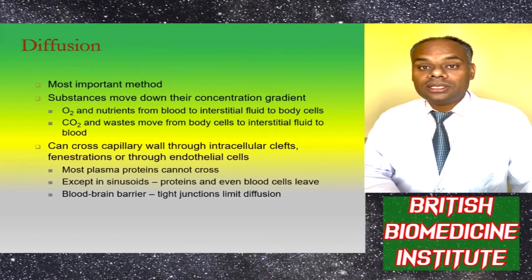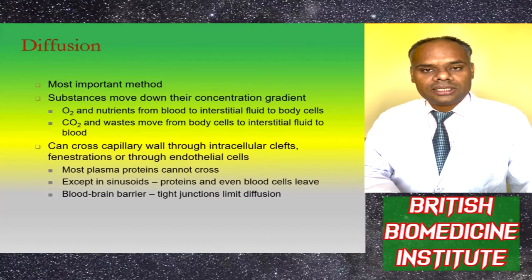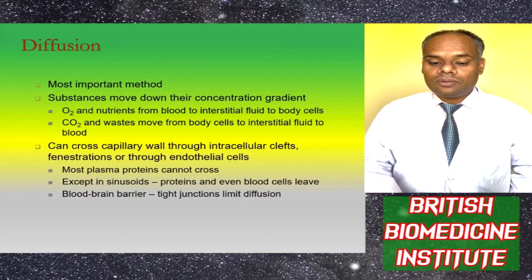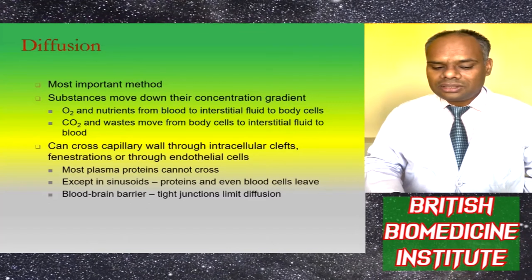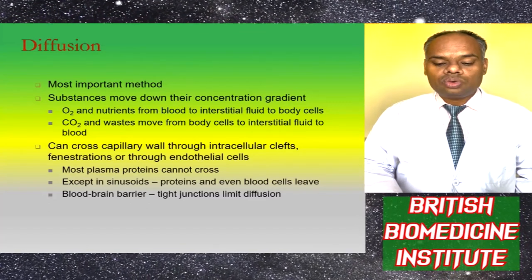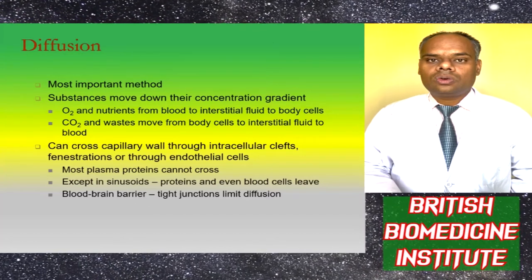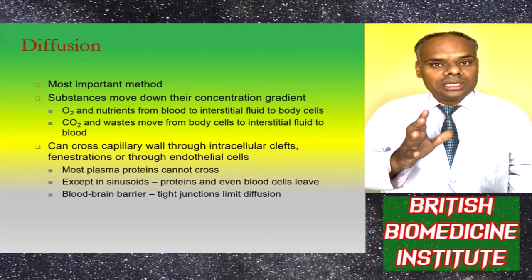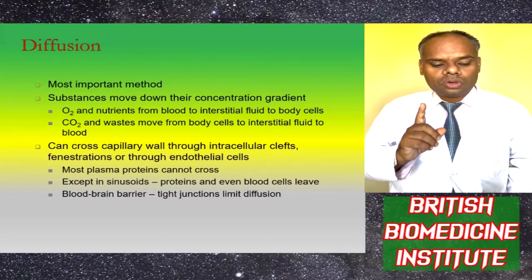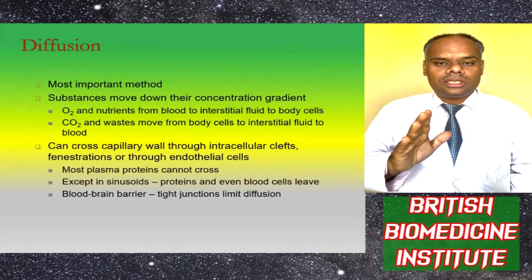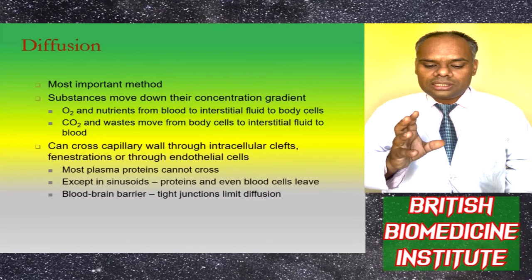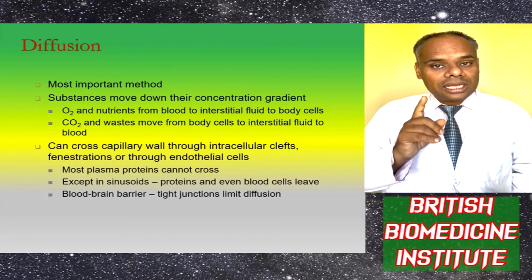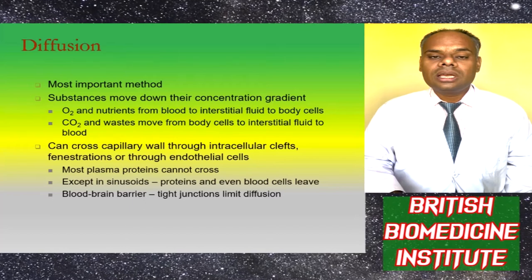Diffusion is the most important method of capillary exchange. Substances move down their concentration gradient: oxygen and nutrients move from blood to interstitial fluid to body cells, while carbon dioxide and waste move from body cells to interstitial fluid to the blood. Substances cross the capillary wall through intercellular clefts, fenestrations, or through endothelial cells. Most plasma proteins cannot cross, except in sinusoids where proteins and blood cells can leave. In the blood-brain barrier, tight junctions limit diffusion.